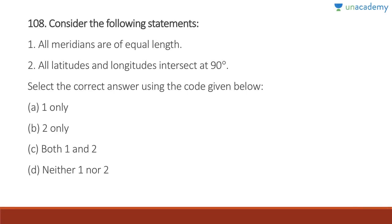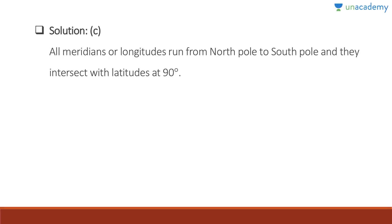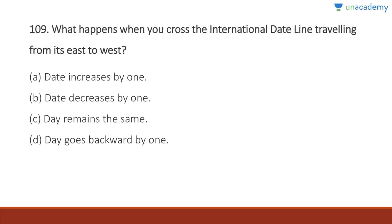Question 108: All meridians are of equal length — absolutely correct. All latitudes and longitudes intersect at 90 degrees — also correct. Answer is C, both one and two. All meridians run from the North to South Pole and intersect with latitudes at 90 degrees.